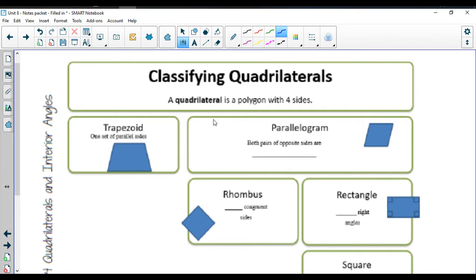A quadrilateral is a polygon that has four sides. On a trapezoid, you have one set of parallel sides. That's all that's required. A trapezoid is a special quadrilateral. So a trapezoid is a quadrilateral. Not all quadrilaterals are trapezoids, though.